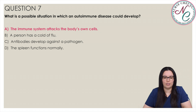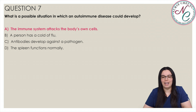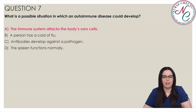Autoimmune disease results when the body attacks its own cells. If a person has a cold or flu, the immune system is fighting foreign pathogens. Antibodies developing against pathogens would be a normal immune response, and the spleen filters blood and is not a vital organ.